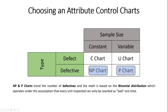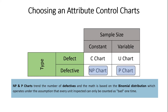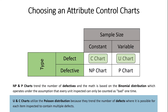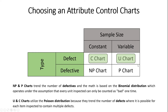The reason we make this distinction between defective units and defects is because it changes the probability distribution that forms the foundation of our control limits. When talking about defective units — where every unit inspected can only be counted as bad one time — we use the binomial distribution. If we're counting defects, where a single unit could contain multiple defects, we use the Poisson distribution. This changes the underlying probability distribution and changes the way our control limits are calculated.